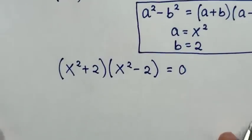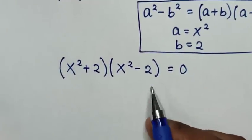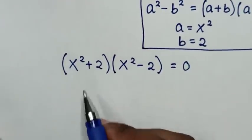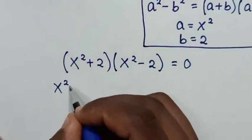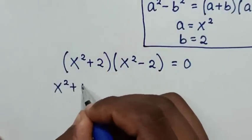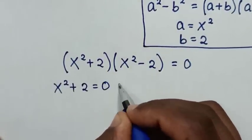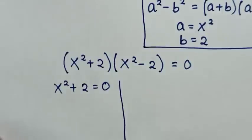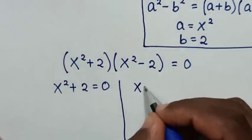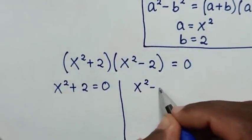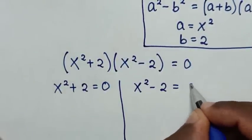In the next step, from our equation, we have two solutions. The first solution is x square plus 2 is equal to 0, and the second solution is x square minus 2 is equal to 0.